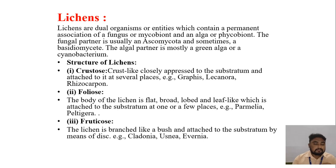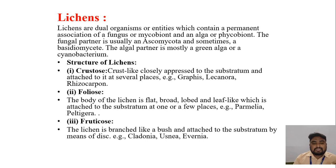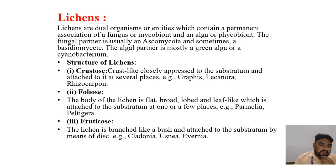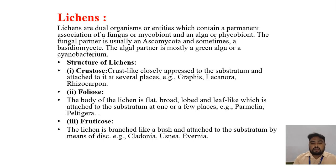The structure of lichens has three types: crustose, foliose, and fruticose. Crustose lichens are crust-like, closely appressed to the substratum and attached in several places — examples: Graphis, Lecanora, Rhizocarpon. Foliose lichens have a flat, broadened, lobed, leaf-like body attached to the substratum at one or a few places — examples: Parmelia, Peltigera. Fruticose lichens are branched like a bush attached to the substratum by means of a disc — examples: Cladonia, Usnea, Evernia.